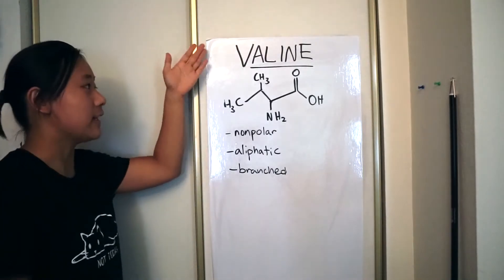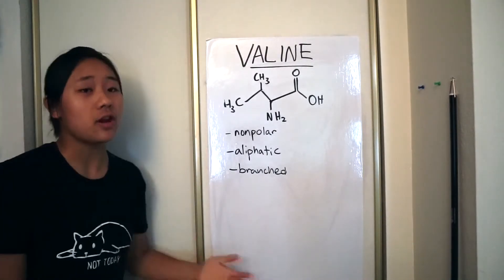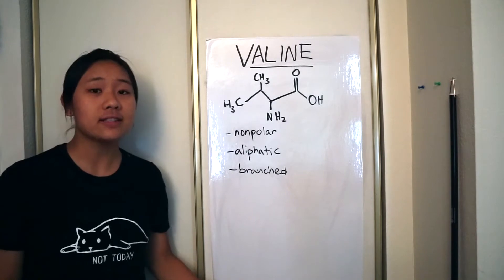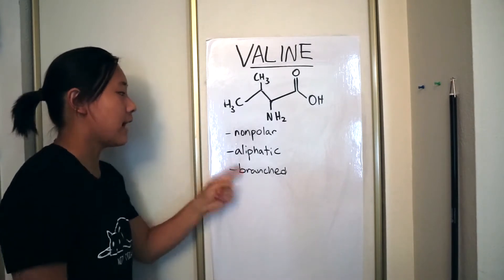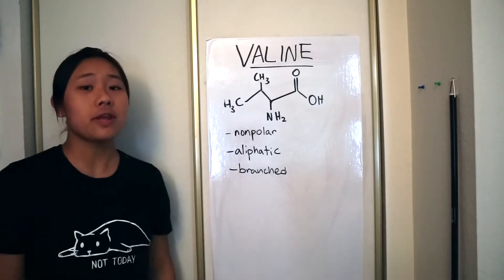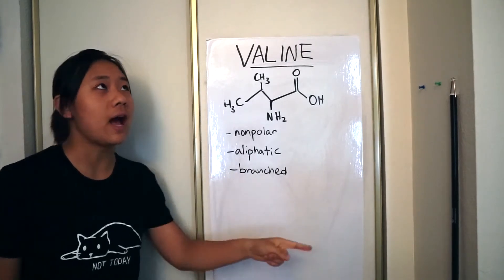Today we'll be discussing valine. This is one of the non-polar amino acids, meaning it's hydrophobic and it's aliphatic. If you don't know what that means, visit my alanine video.